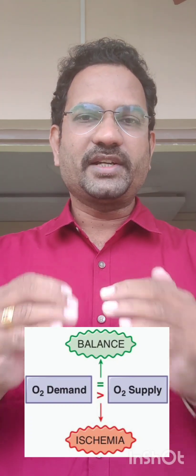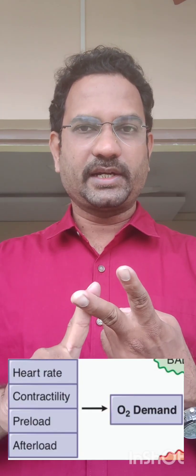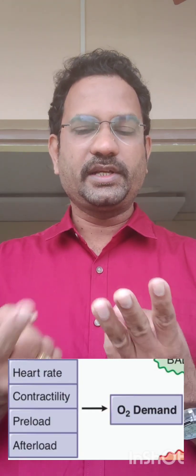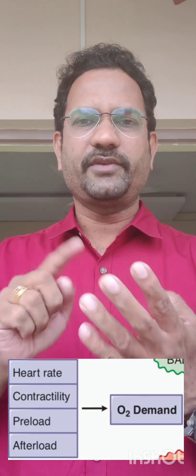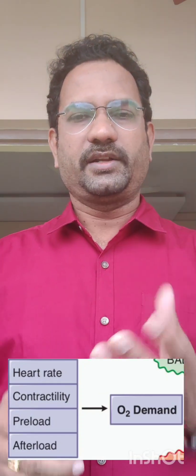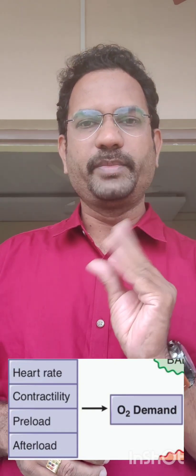What are the factors that increase oxygen demand? Increase in heart rate, increase in contractility, increase in preload, and increase in afterload — all of them will increase oxygen demand. Heart rate: when heart rate is 70 beats per minute, if more beats occur, more energy is required and oxygen demand is increased. Contractility means force of contraction — if the heart is contracting with a lot of force, it requires a lot of energy and oxygen demand increases.